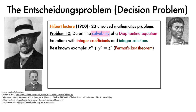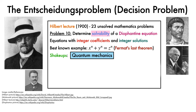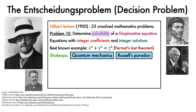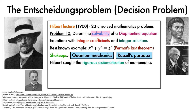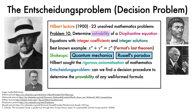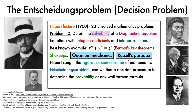In the two decades following Hilbert's lecture, there were many shakeups in mathematics. Einstein laid the foundations for quantum mechanics in 1905, which later led to the uncertainty principle of Heisenberg. Bertrand Russell then raised a delicate issue known as Russell's paradox: whether we can define sets that contain all sets that do not contain themselves. To get things back on solid ground, Hilbert set out on a quest to achieve the rigorous axiomatisation of mathematics. Beginning with lectures in the early 1920s, he described an alternative version of the 10th problem from his 1900 lecture, under the name Entscheidungsproblem: the task of finding a decision procedure to determine the provability of any well-formed formula.